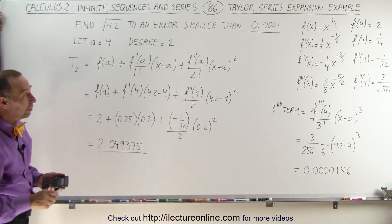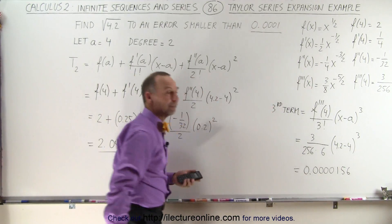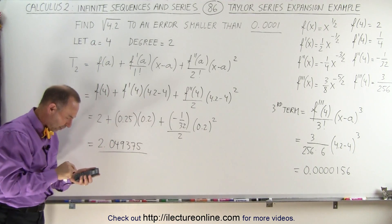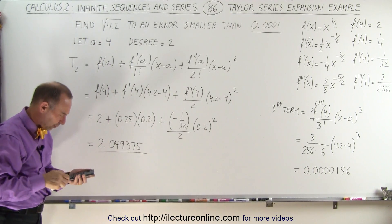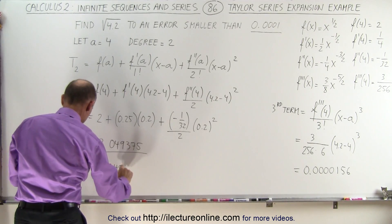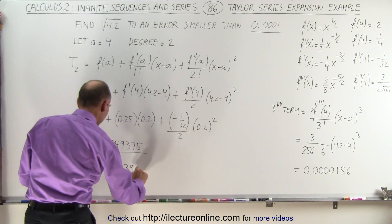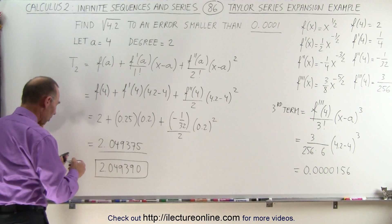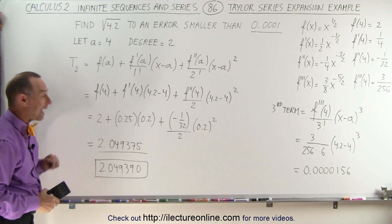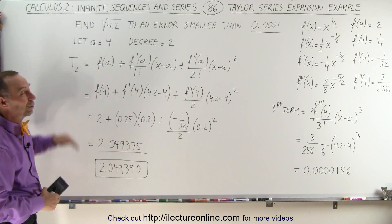That's not the exact solution, but we know it's going to be close with a very small error. Let's now use our calculator to find out what is the square root of 4.2. The actual number is 2.049390. You can see that there's just a very small difference between the approximated value and the actual value using the Taylor series expansion to only three terms.